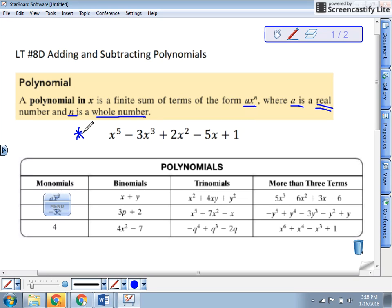Here's an example right here. x to the fifth minus 3x to the third plus 2x squared minus 5x plus 1. So all the exponents are whole numbers. All of the coefficients are real numbers. Now, notice it's in descending order. That's how we write these, descending order in terms of the exponents.